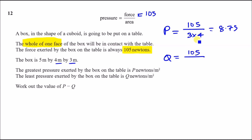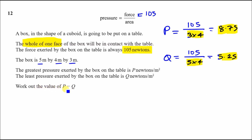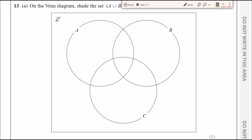For least pressure q: use the largest face area, which is 5 × 4 = 20. So q = 105 ÷ 20 = 5.25 N/m². Therefore p − q = 8.75 − 5.25 = 3.5.